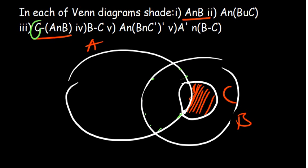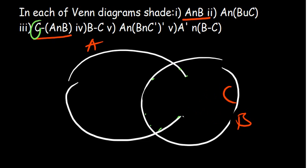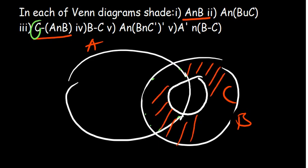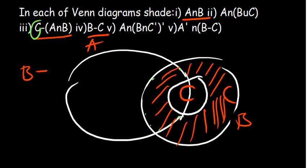What about B minus C? B minus C means you are interested in the region that is part of B, excluding C. Since C is a smaller set inside B, the region B minus C is the outer region of B excluding C. So B minus C is the part of B outside of C.